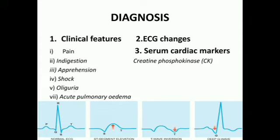Third is serum cardiac markers. Creatine phosphokinase (CK) can be divided into three forms: CK-MM derived from skeletal muscles, CK-BB derived from the brain and lungs, and CK-MB mainly from cardiac muscles with an insignificant amount from extra-cardiac tissues. CK estimation helps determine whether it is angina pectoris or myocardial infarction.